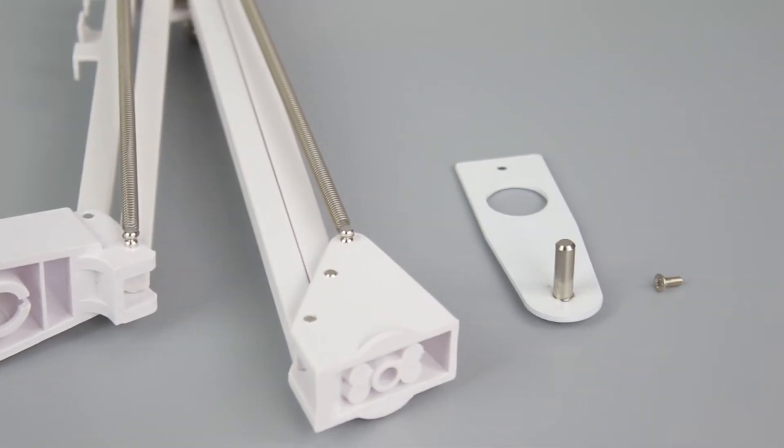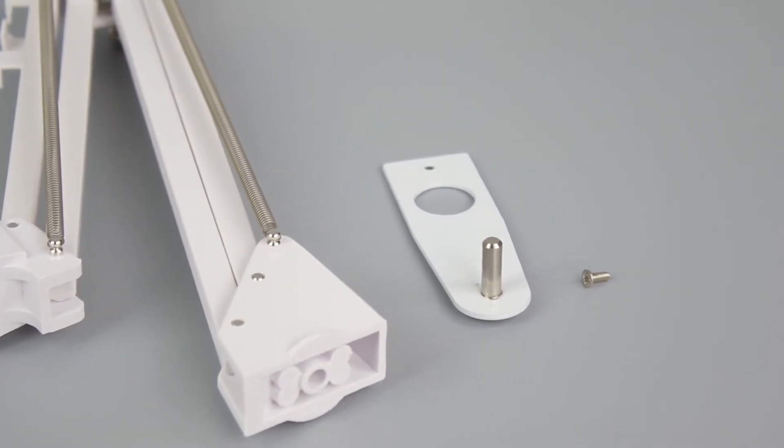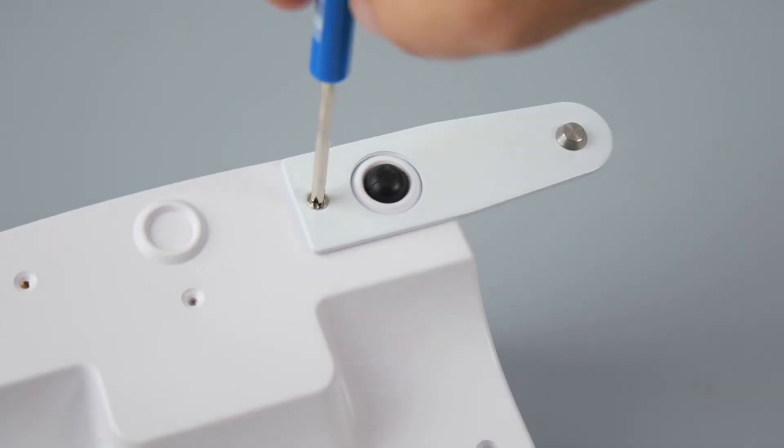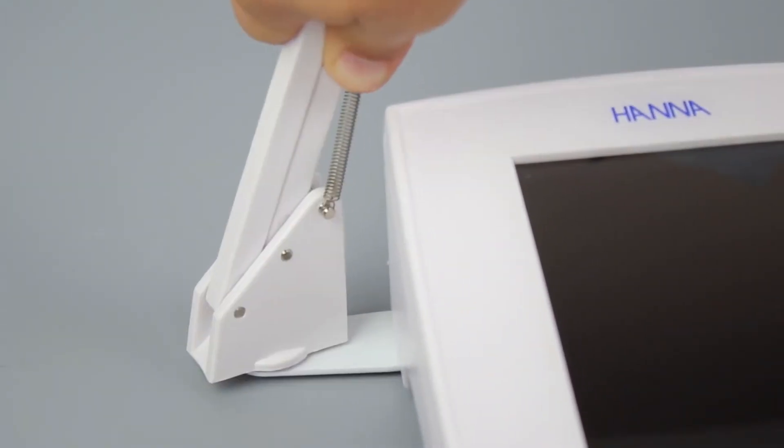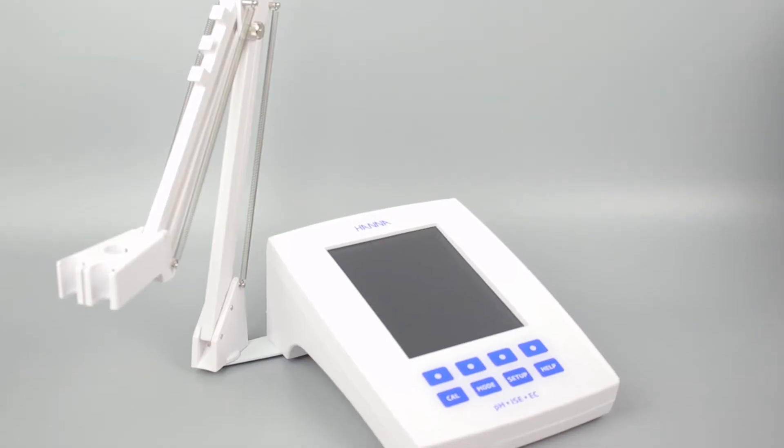Inside the box, you'll find the base plate, screws, and the electrode holder. To attach the holder, screw the base plate into the bottom of the meter and slide the arm into place. Once that is assembled, you can begin setting up your meter.